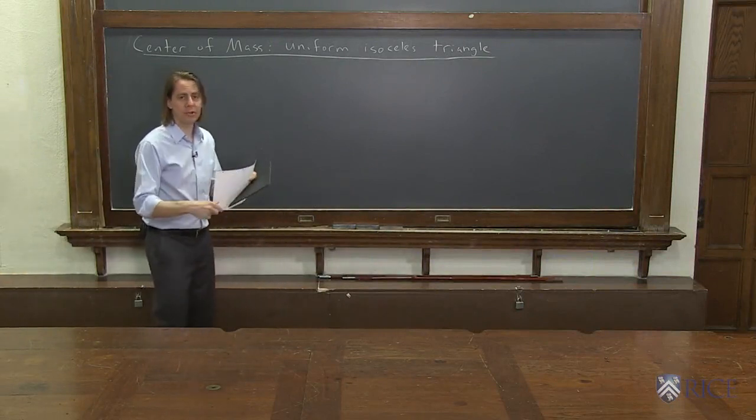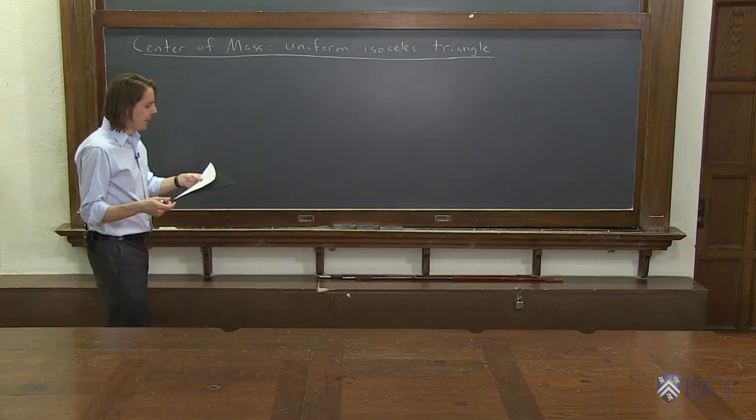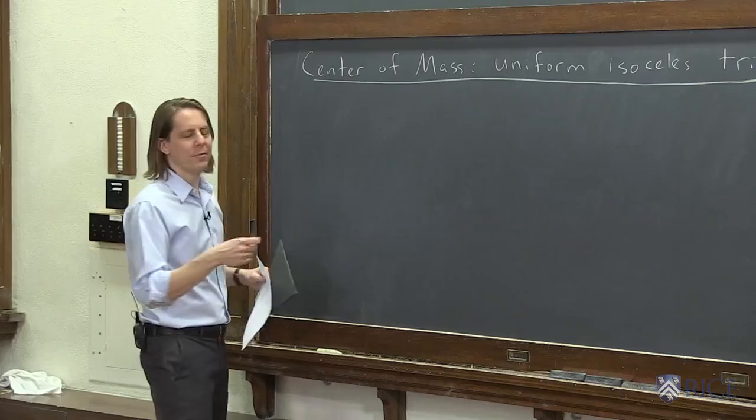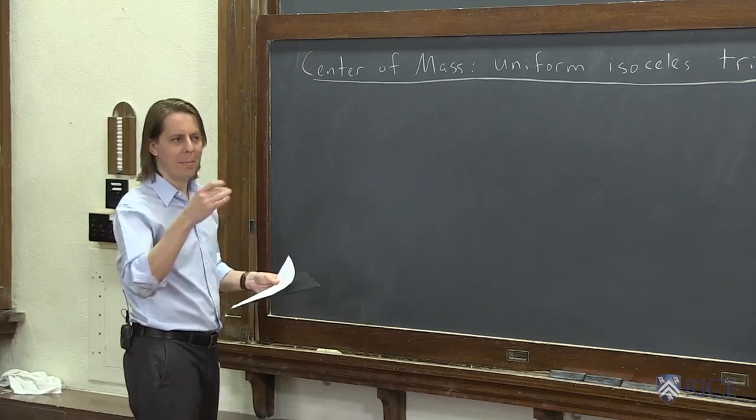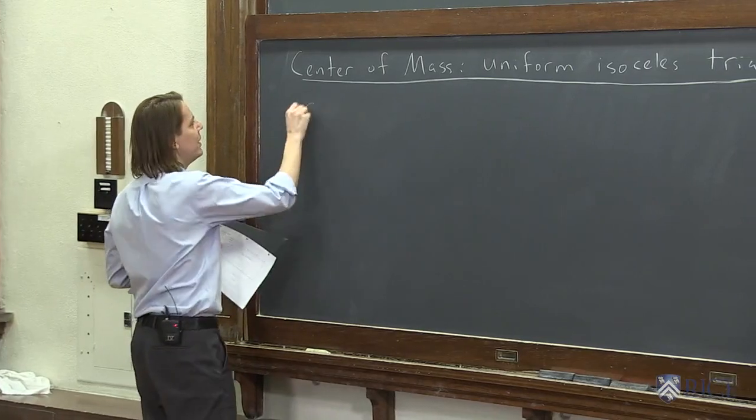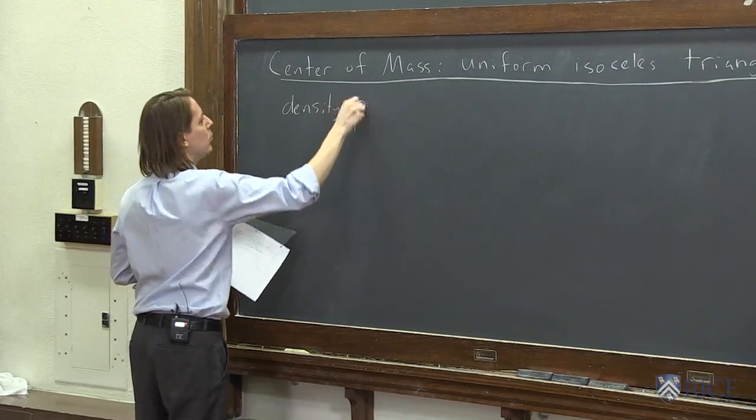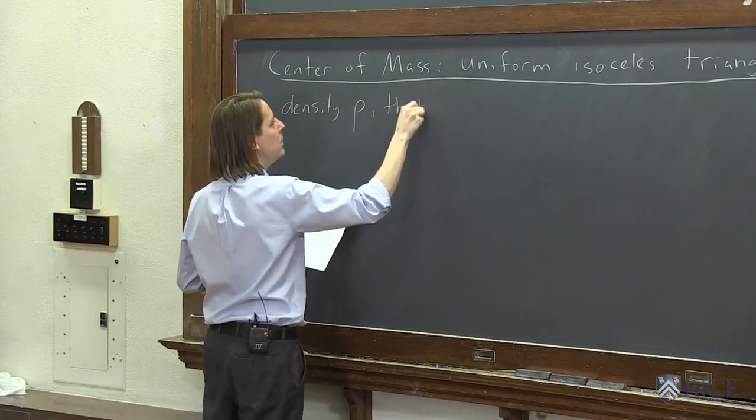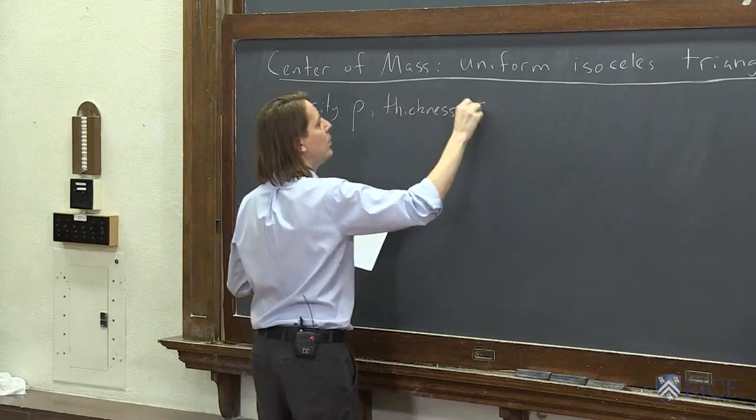Remember, this is a triangle where two of the angles are the same. Since it's more of a 3D object, we need to now define a volume density, a normal mass per unit volume. So we'll say it has density rho, and we'll say it has thickness, and we'll call that s.